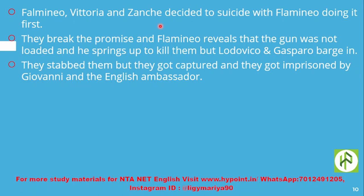Lodovico and Gasparo stab Vittoria and Flamineo, but are then captured and imprisoned by Giovanni and the English Ambassador. That is how the play ends. It is a revenge tragedy in which the extramarital affair is the central theme, and around it every character reveals their true nature and meets some form of tragedy.